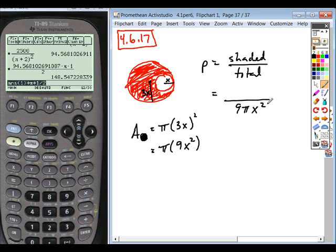And now I need to find the shaded region. Well, the shaded region is the whole thing, which we just found, 9 pi x squared, minus this small white circle. What's the area of the small white circle in terms of how I labeled this?